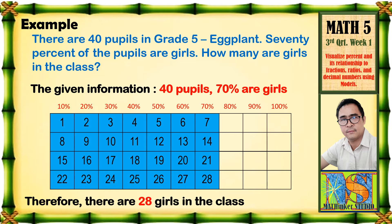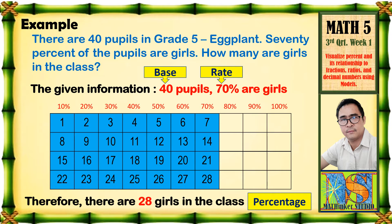Ngayon, ano ang tawag natin dun sa 40 pupils? Ito ang tinatawag nating base — ito ang kabuoang bilang ng Grade 5 Eggplant. At yung 70% naman, ang tawag natin dito ay rate. At ang 28, ito ang tinatawag nating percentage, dahil ang percentage ay nanggaling sa base depende sa rate nito.